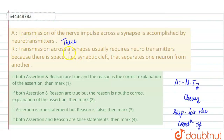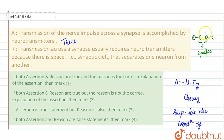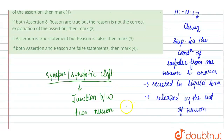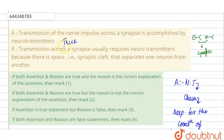Now let's discuss the reason: transmission occurs across a synapse and usually requires neurotransmitters because there is a space between the two neurons — this space is known as the synapse. This synaptic cleft separates one neuron from another, and it requires neurotransmitters to conduct the impulse from one neuron to another. So both statements are true and the reason is also the correct explanation of the assertion. We will mark the first option.